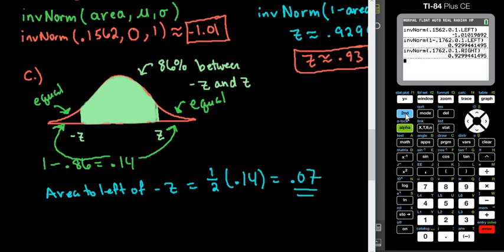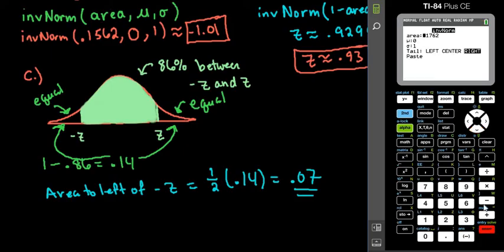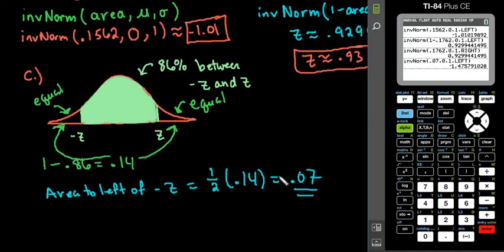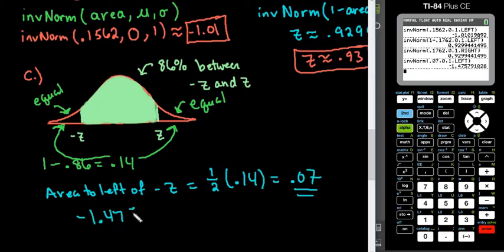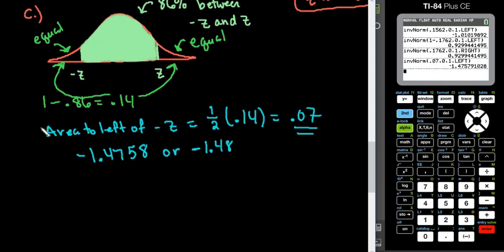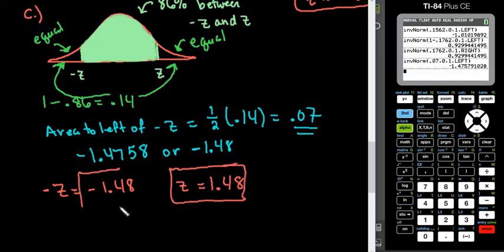Half of 0.14 is 0.07, and this is what I would plug into my calculator. Because most calculators don't have the left/center/right option, I would type in 0.07 and change this back to left. This will only give me the negative value — and the reason it's negative is because 7% is less than 50%. So we end up with negative 1.4758, or approximately negative 1.48. Remember, we are looking for two Z-scores. So negative Z is negative 1.48 and positive Z is just the opposite, 1.48. Those are your two answers — Z is 1.48 and Z is negative 1.48 — the two Z-scores where 86% of the area is in between.